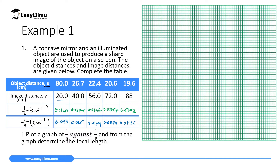Now plot the graph of 1 over u against 1 over v. Draw the y-axis and x-axis. Label the y-axis as 1 over u per centimeter and the x-axis as 1 over v per centimeter.